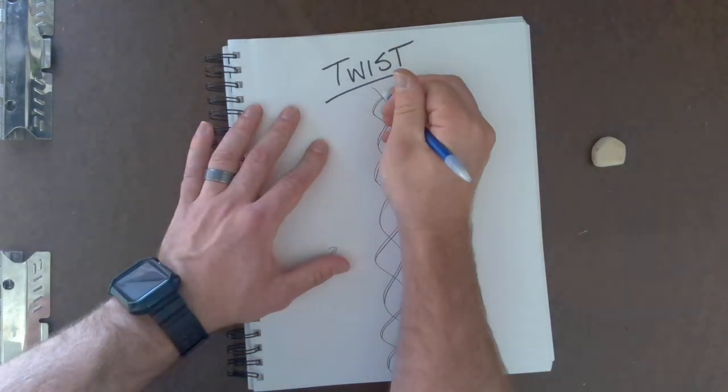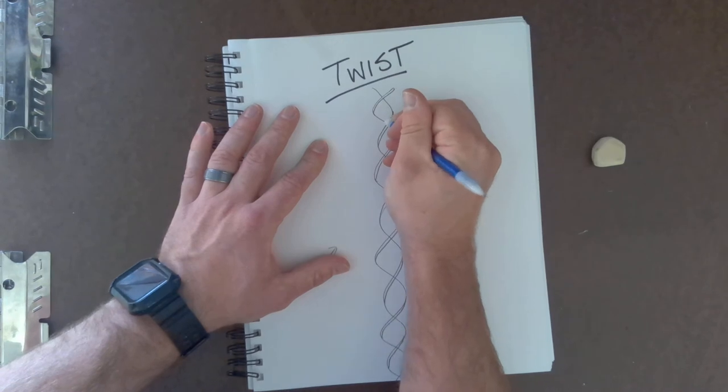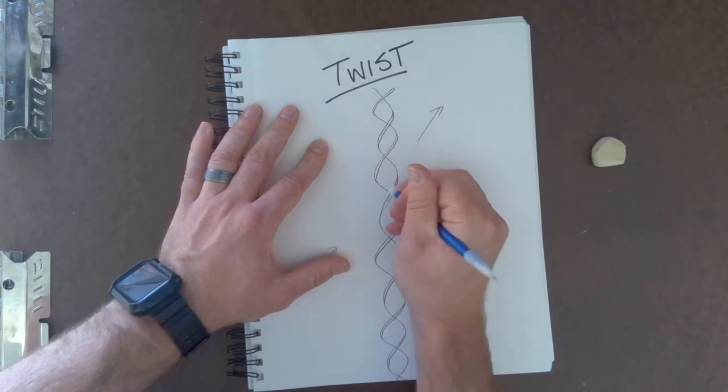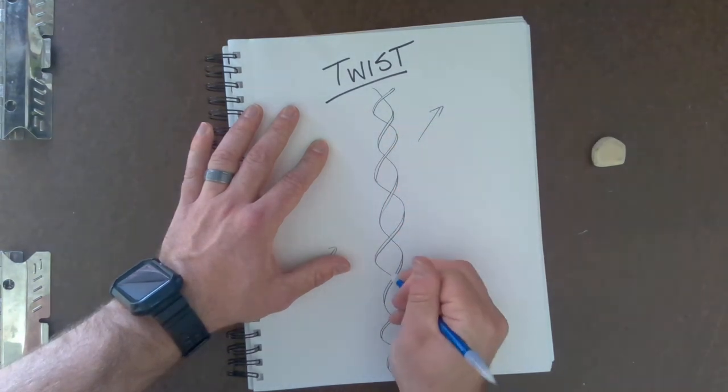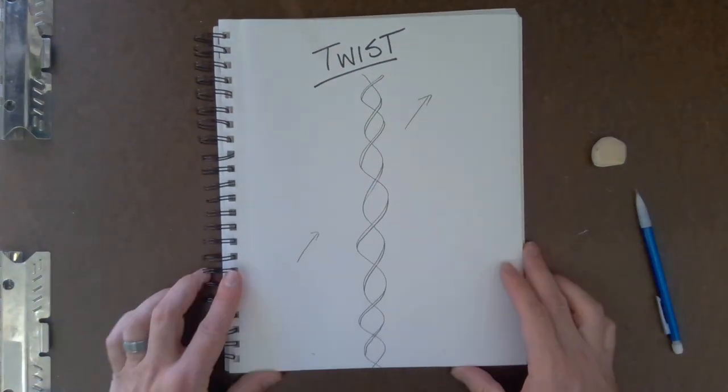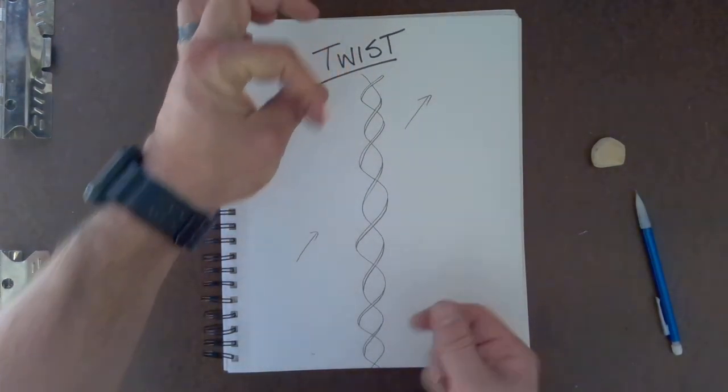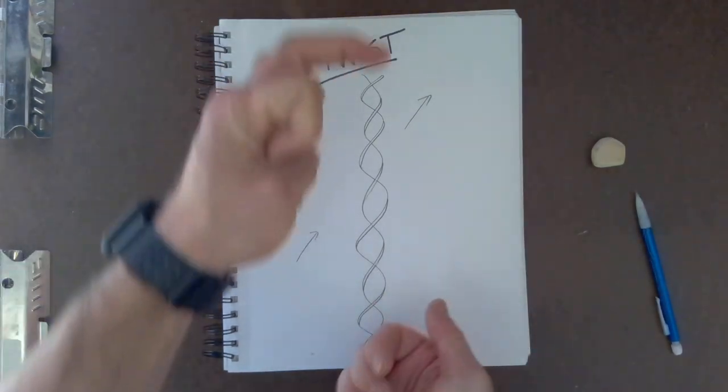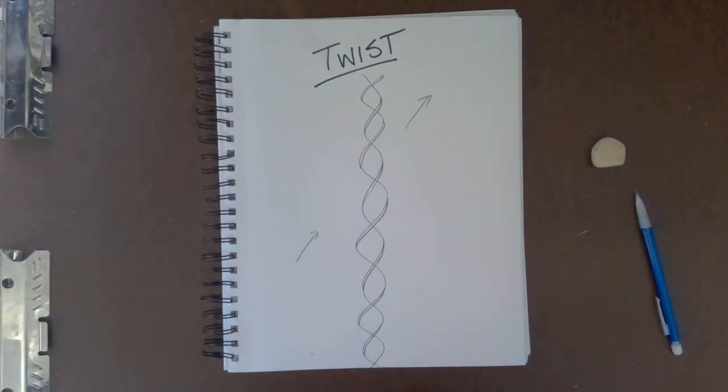And then to be technically correct, I would need to erase that little tiny line in between those two closer lines. And this is the twist, where it looks like you take the ribbon and you twist it, and it basically twists all the way downward.